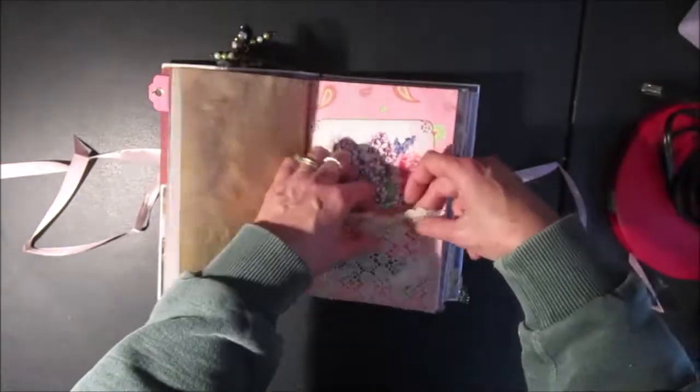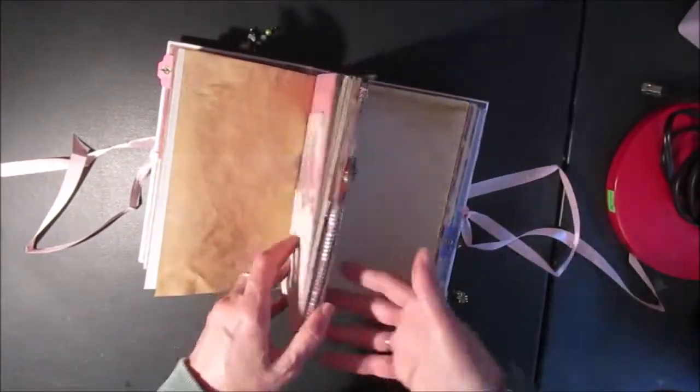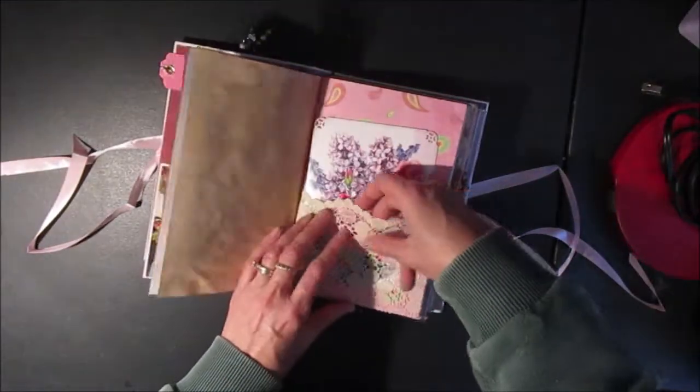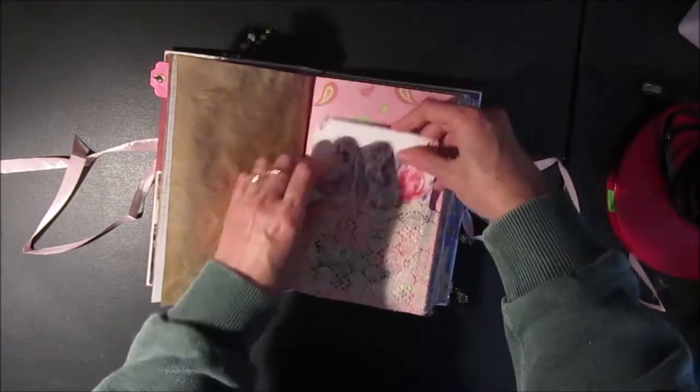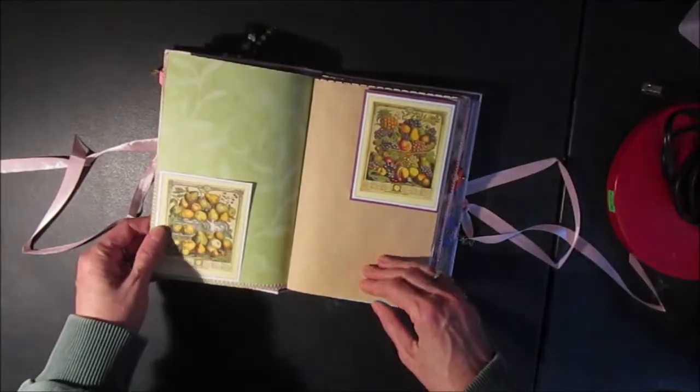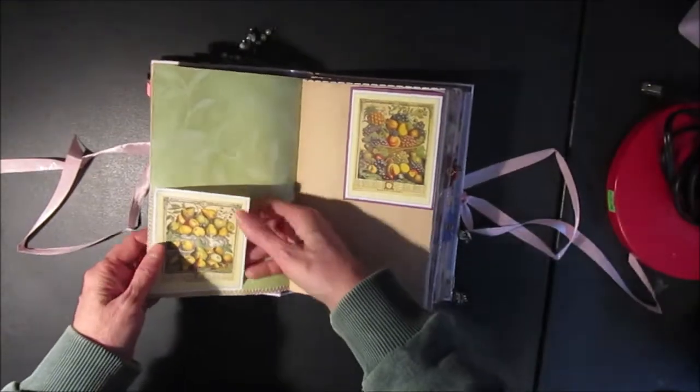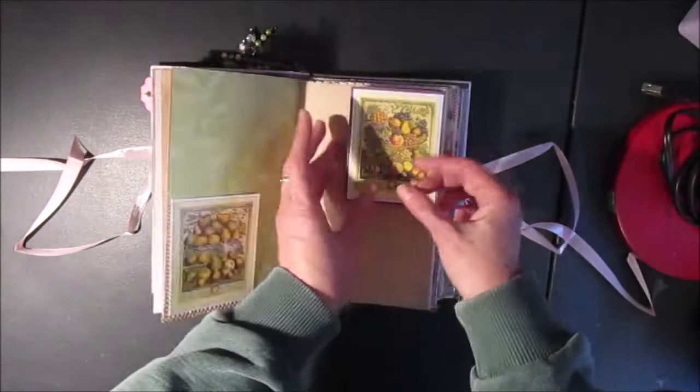And then here I have some lace. And this goes all the way over to the other side of the signature. And it's shaped like a pocket and I stitched around the edges to hold that in place. And here's another image, this one is fruits. And again that opens like that.